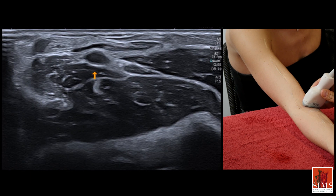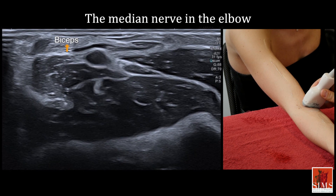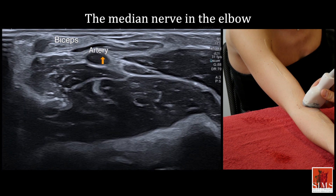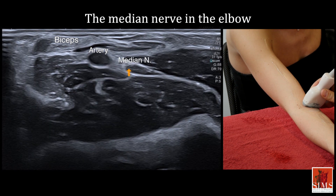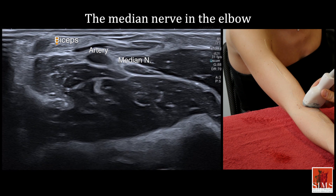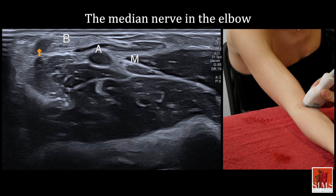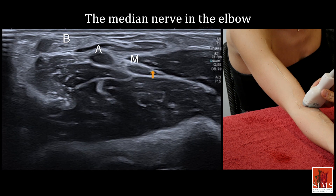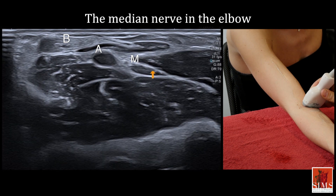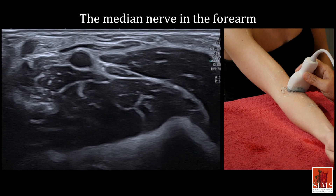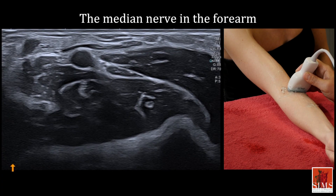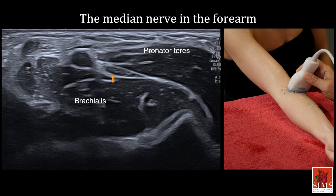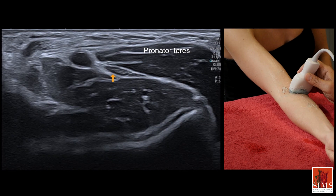At the elbow, the lateral aspect of the biceps tendon and the brachial artery, and thus the median nerve, are in close proximity. The median nerve is the most medial component of this complex called BAM: biceps tendon, brachial artery, median nerve. Starting from this position in the BAM, the median nerve enters the forearm between the two heads of the pronator teres muscle.